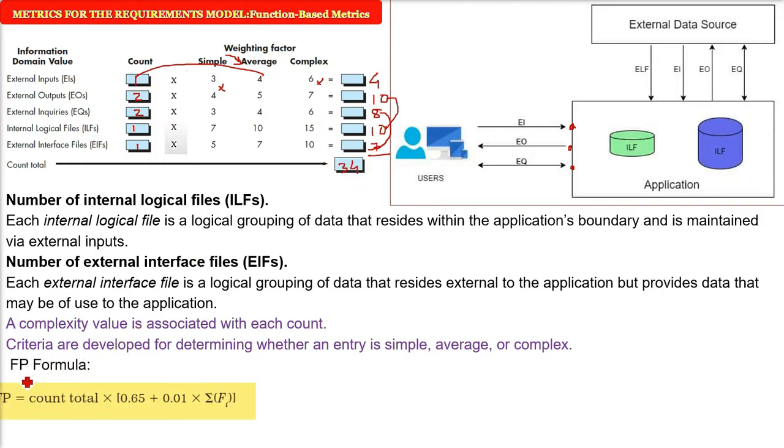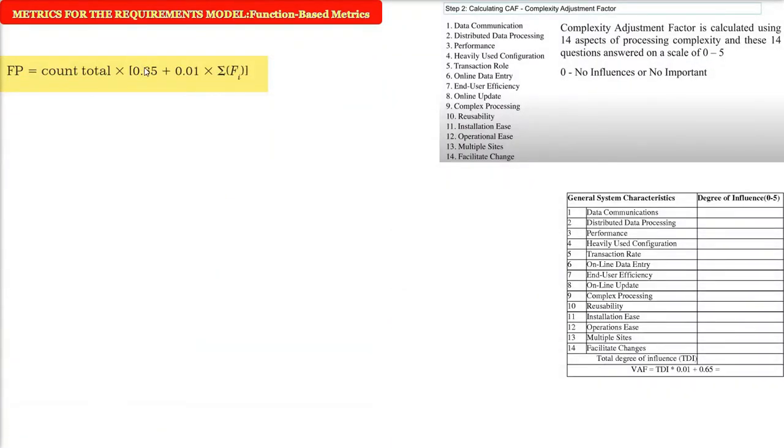So what we are going to do here is eventually it will be some number and that we will call as count total. And then we will multiply it with 0.65 plus 0.01 into sigma Fi. Now count total is computed. What is sigma Fi? The sigma Fi will be computed. We have 14 parameters here or 15 general system characteristics.